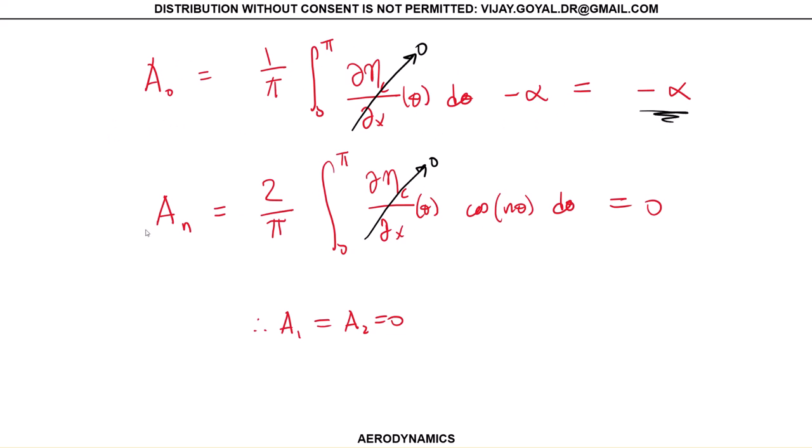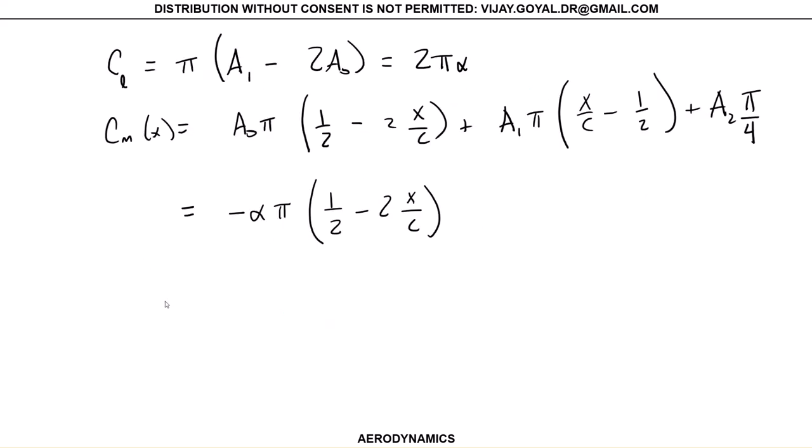To find the location where ∂c_m/∂α equals zero, which gives us the aerodynamic center, we differentiate. This gives -π(1/2 - 2x/c) = 0.